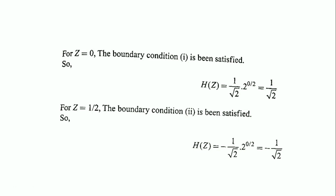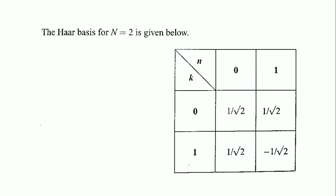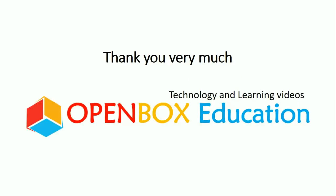So the Haar basis for N equals 2 is: when k equals 0 and z equals 0, h equals 1/√2; when k equals 1 and z equals 0, h equals 1/√2; when k equals 0 and z equals 1/2, h equals 1/√2; and when k equals 1 and z equals 1/2, h equals −1/√2. This completes the Haar basis for order N equals 2. Thank you very much for watching this video.